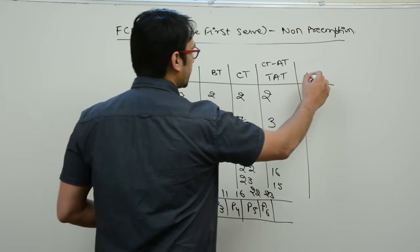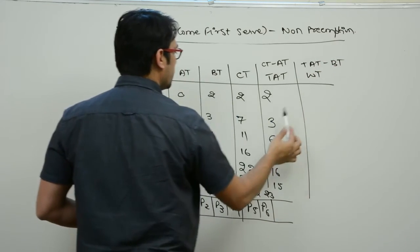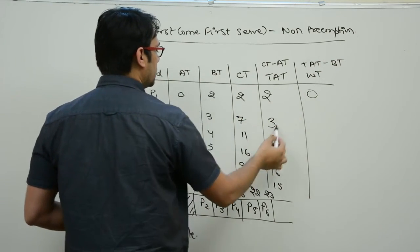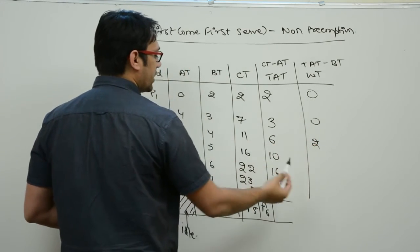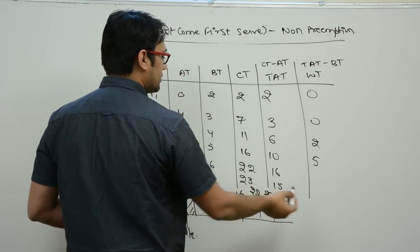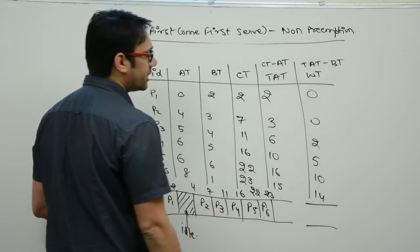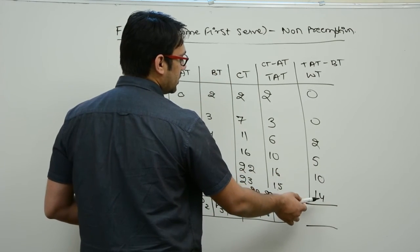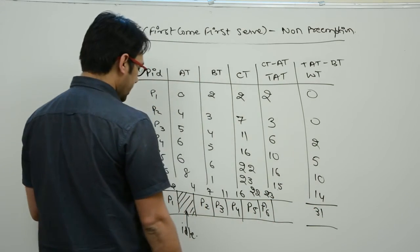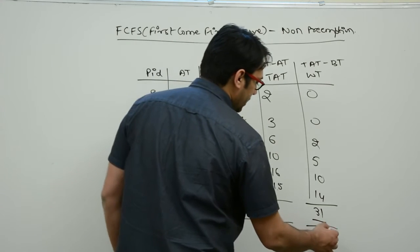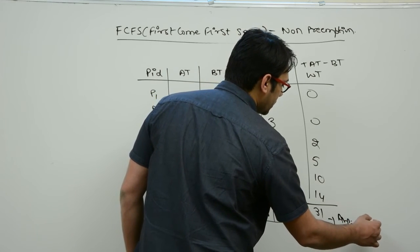The waiting time is turnaround time minus burst time: p1=0, p2=0, p3=2, p4=5, p5=10, p6=14. The total waiting time is 0+0+2+5+10+14 = 31. The average waiting time is 31 divided by 6, which is approximately 6.16.